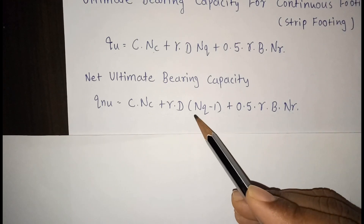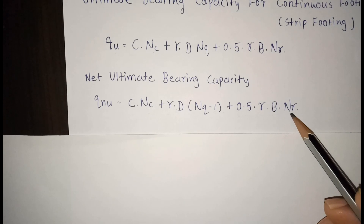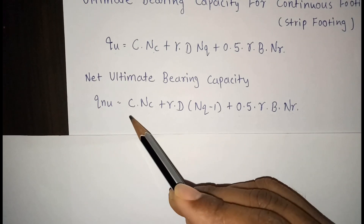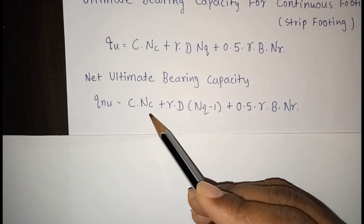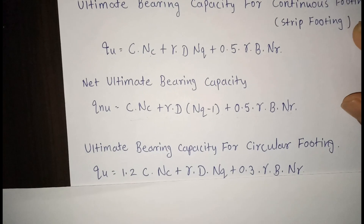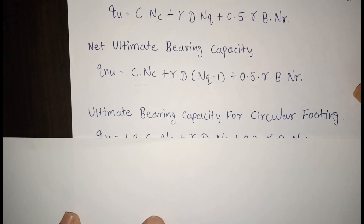The three terms correspond to: the first term is related to cohesion, the second term is related to overburden pressure above the foundation, and the third term is related to the soil below the foundation.